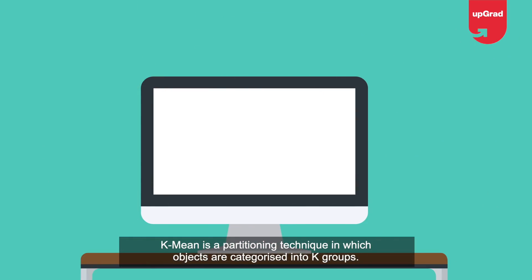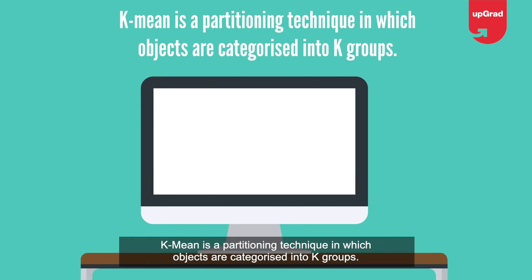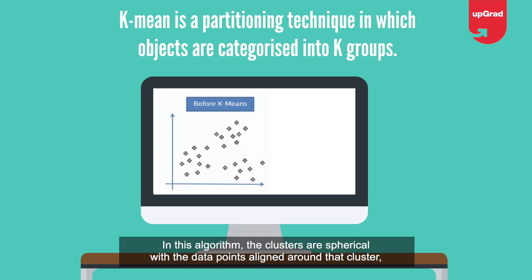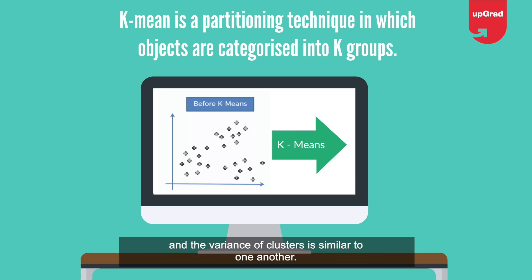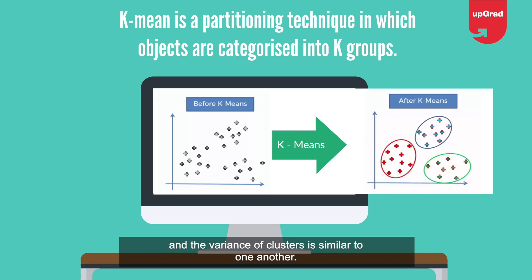What is the k-mean algorithm? K-mean is a partitioning technique in which objects are categorized into k-groups. In this algorithm, the clusters are spherical with the data points aligned around that cluster, and the variance of clusters is similar to one another.